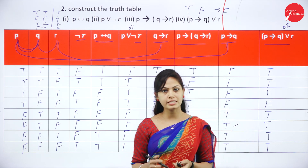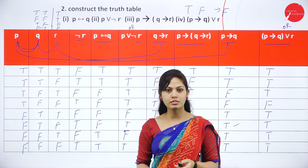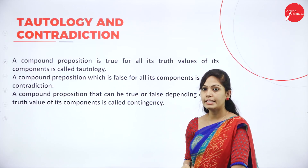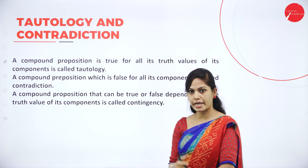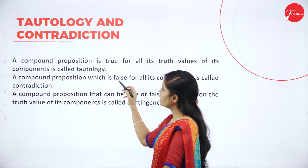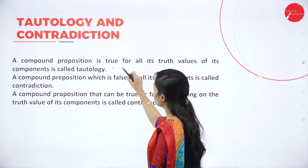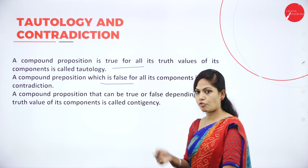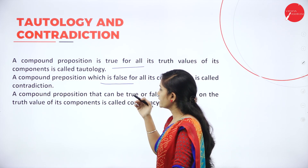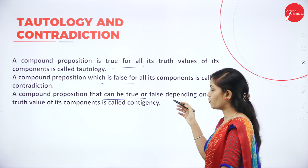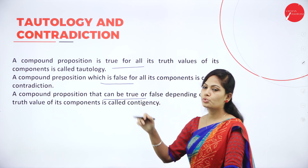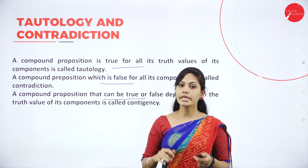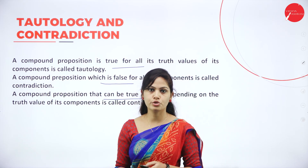Please practice these problems — you can easily score in this topic. Tautology means a statement which is always true. Contradiction means a statement which is always false. Contingency means a statement that can be true or false depending on the truth value. You can expect this question for two marks.